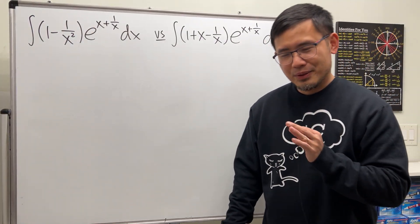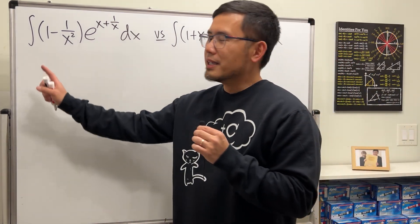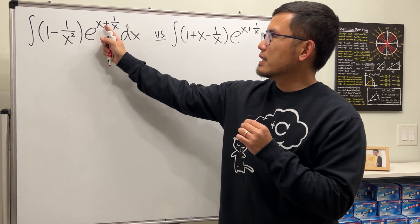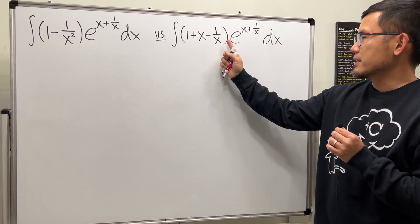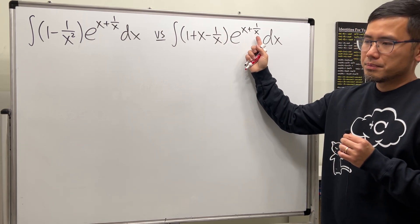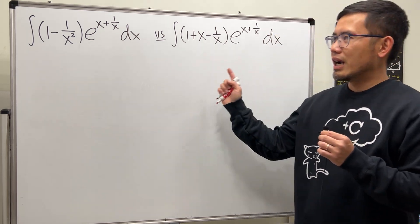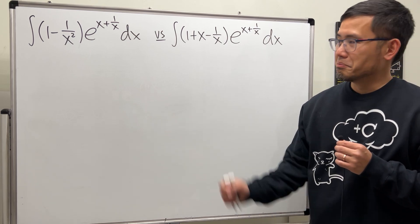Alright, let's do an integral battle. Haven't done this for a while. So here's one for you guys: the first integral is the integral of (1 - 1/x²)e^(x + 1/x) dx, and the second one is (1 + x - 1/x)e^(x + 1/x) dx. As always, please pause the video and try them first. Done? Which one's easier? That one, right?